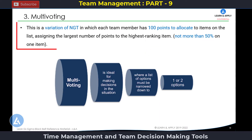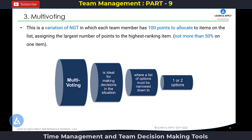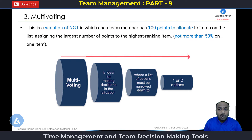The third team decision making tool is multivoting. This is a variation of NGT in which each team member has 100 points to allocate to items on the list, assigning the largest number of points to the highest ranking item. A team member should not allocate more than 50% of the score on one item. This multivoting exercise is ideal for making decisions where a list of options must be narrowed down to one or two options. It is similar to NGT, with the only difference being the allocation method of scores.